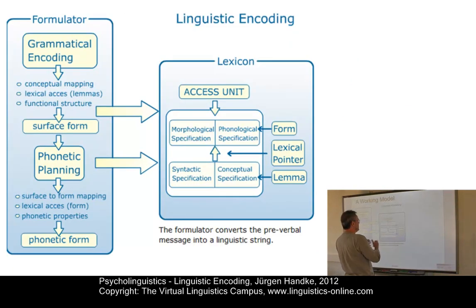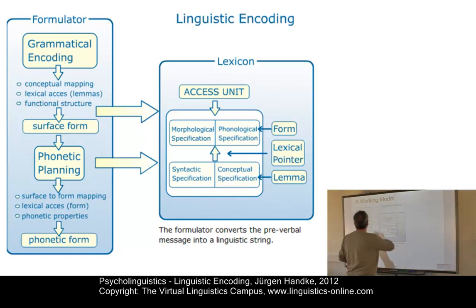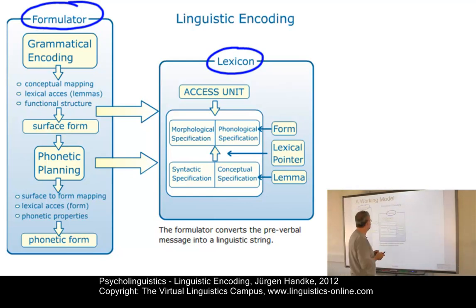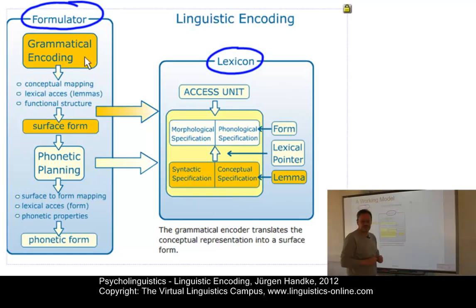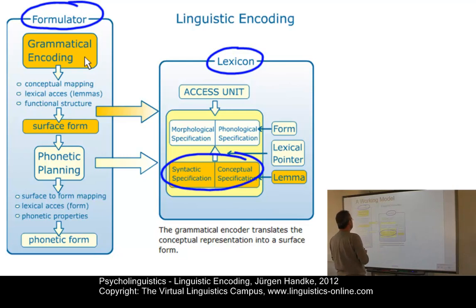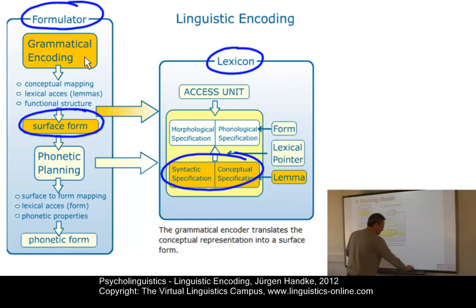Here is the working model which specifies the level of linguistic encoding. It can be subdivided into two central components: on the one hand, the formulator, which consists of several linguistic levels, and on the other hand, the mental lexicon, which will not be discussed in this clip as there is a separate clip dedicated to the structure of the lexicon and lexical entries. Within the formulator, the first central level is called grammatical encoding. This level retrieves from the mental lexicon the syntactic and conceptual information of lexical entries and generates as an internal output the so-called surface form.